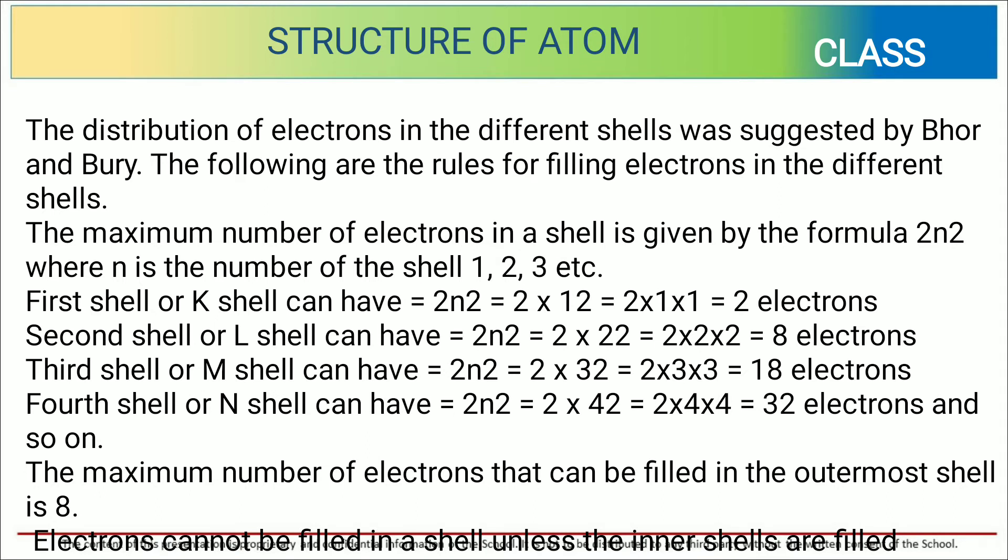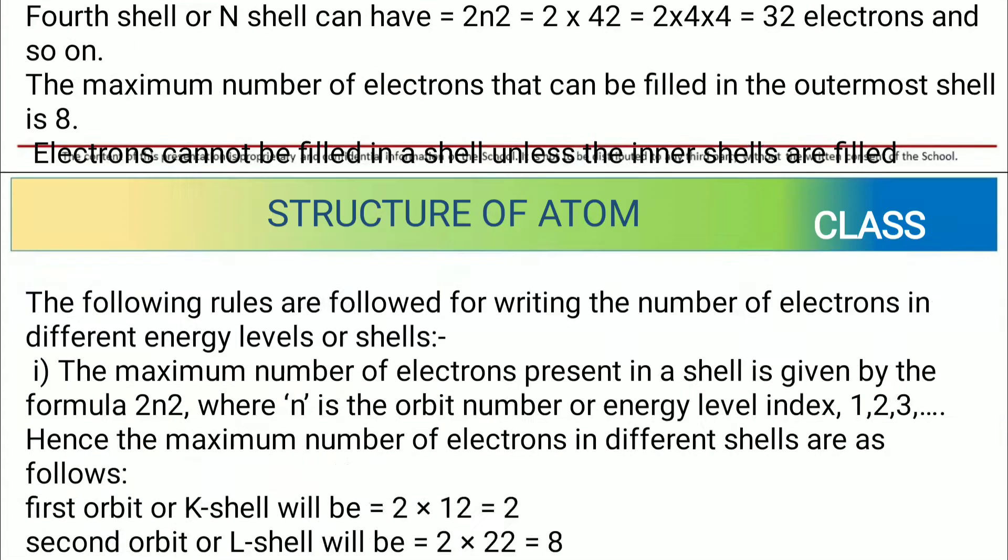The maximum number of electrons that can be filled in the outer shell is 8. Electrons cannot be filled in a shell unless the inner shells are filled.